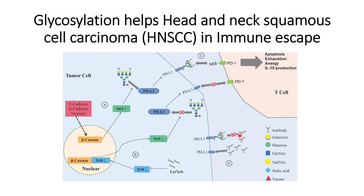Another important problem with glycosylated PD-L1 is that anti-PD-L1 antibodies used in immune checkpoint therapies will not work efficiently if PD-L1 is glycosylated — their efficacy is drastically reduced. Therefore, deglycosylation of PD-L1 is essential so that antibodies can effectively block PD-L1 on tumor cells and increase immune cell activity against tumors.